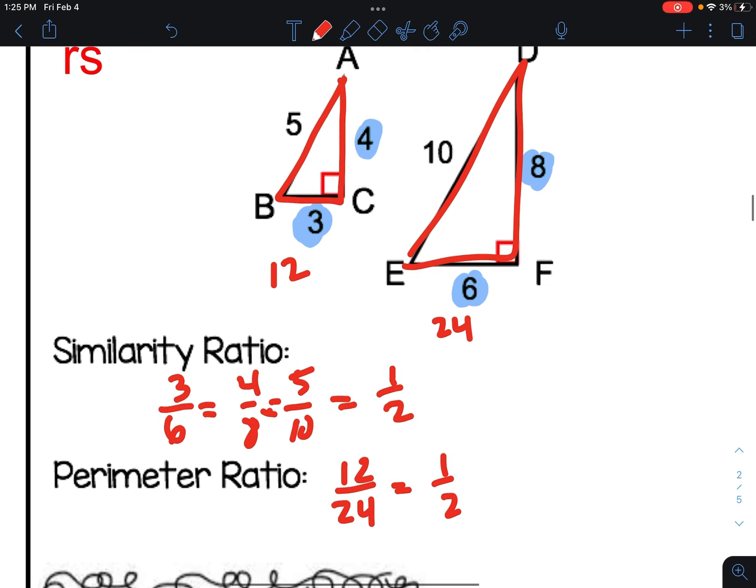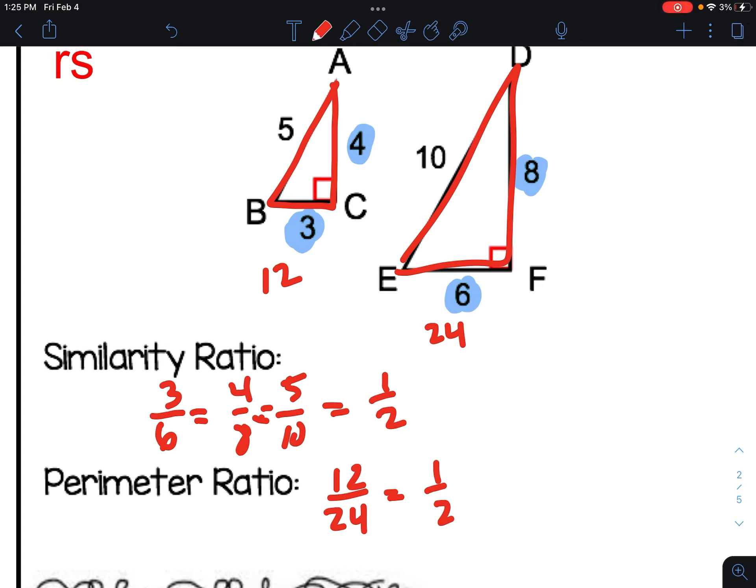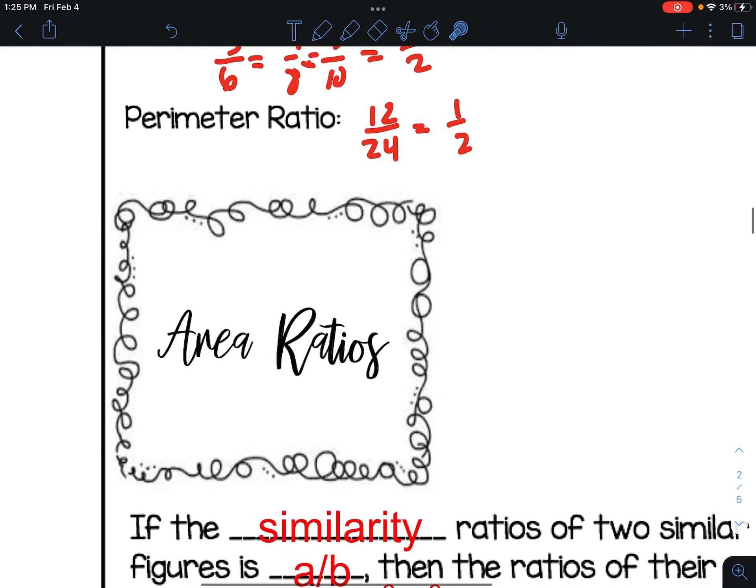And so if we know the similarity ratio of these two shapes going from the 3 to the 6 was 1 to 2, then I know the perimeter ratio automatically is 1 to 2. And we're going to apply that here in a second. So similarity ratio is the same as the ratio of the perimeters.